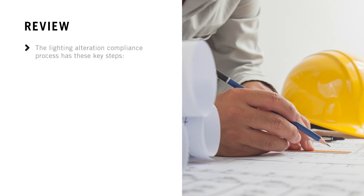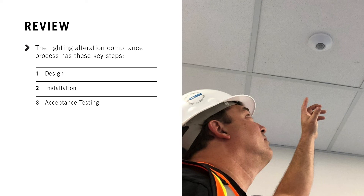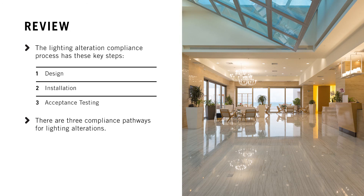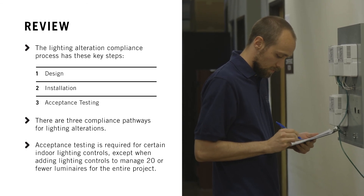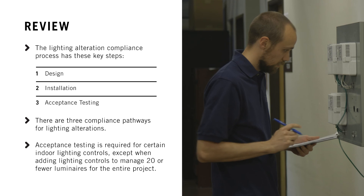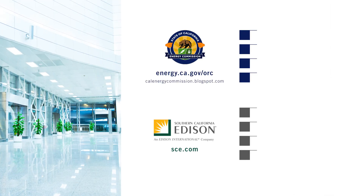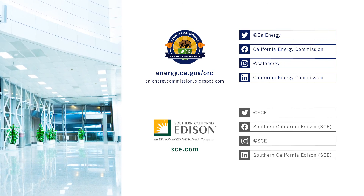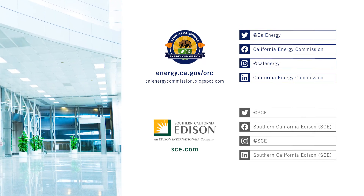Let's review what we've learned. The lighting alteration compliance process has these key steps: design, installation, and acceptance testing. Each of these steps must be documented on the corresponding compliance forms. There are three compliance pathways for lighting alterations, and acceptance testing is required for certain indoor lighting controls, except when adding lighting controls to manage 20 or fewer luminaires for the entire project. That wraps up the indoor lighting alterations compliance process. For more information, visit the Energy Commission website at energy.ca.gov/ORC.